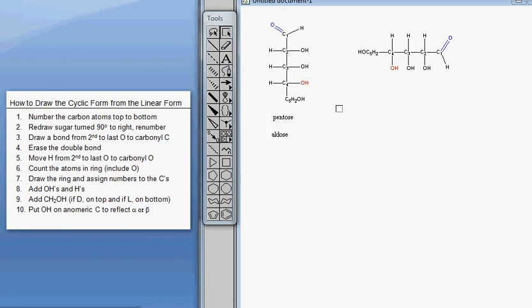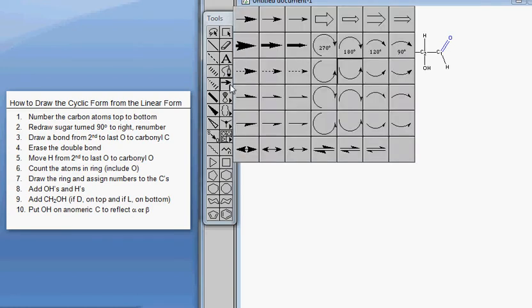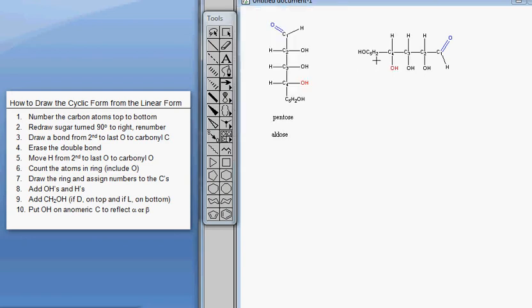Step three, I'm going to draw a bond from the last OH on a chiral carbon to my carbonyl carbon. So there it is, my bond. And step four, erase the double bond. Again, this is going to automatically give me an OH.